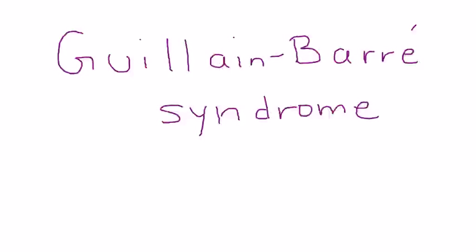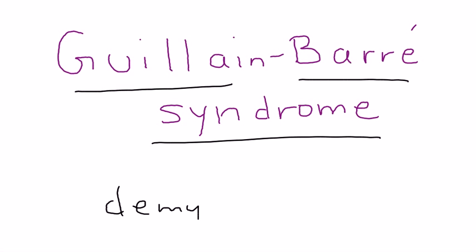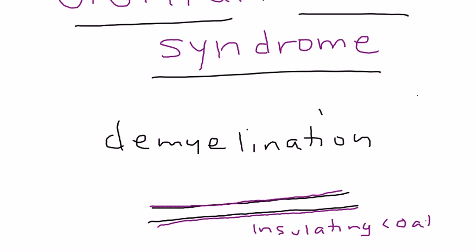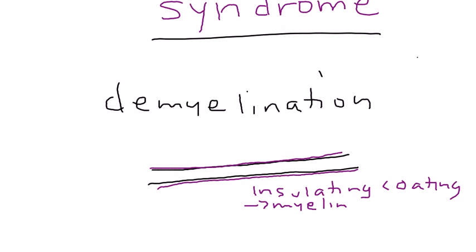Guillain-Barre syndrome is the topic for this video. Guillain-Barre syndrome involves essentially a demyelination of the nerves. The nerves in our body have an insulating coating, and that coating is called myelin.